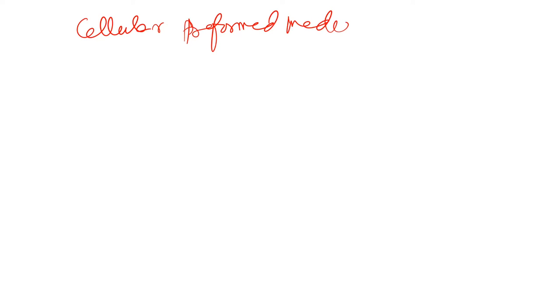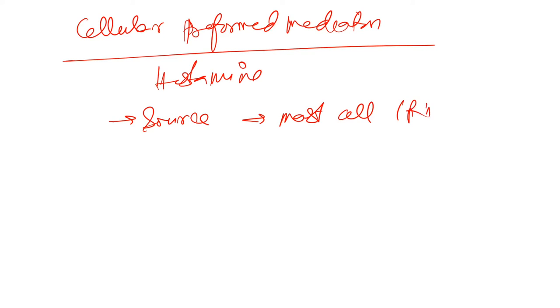First comes histamine. Histamine, where is the source? Source are from the mast cell, that is the richest source of histamine. Then we also get it from basophils. Histamine also comes from basophils. Also we get it from platelets. Now the functions of histamines.